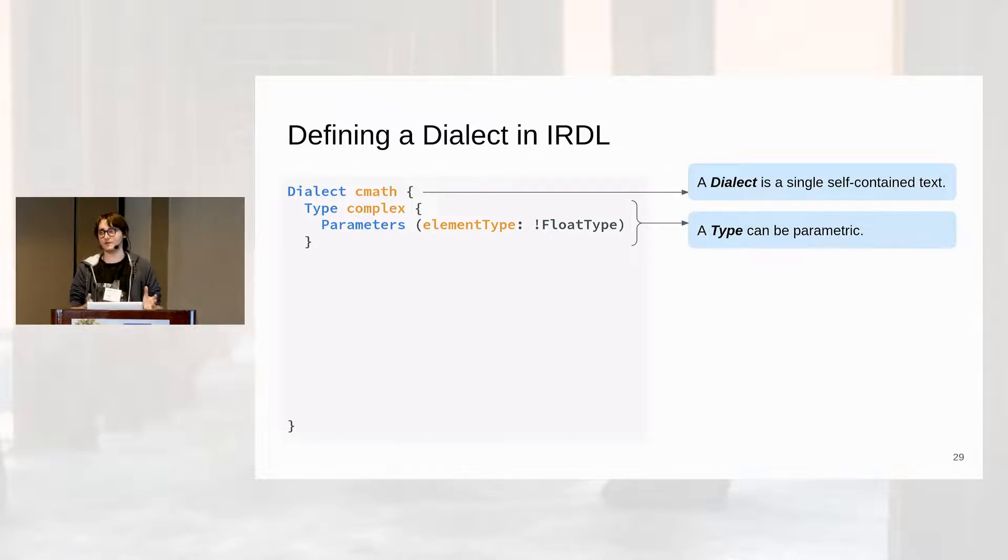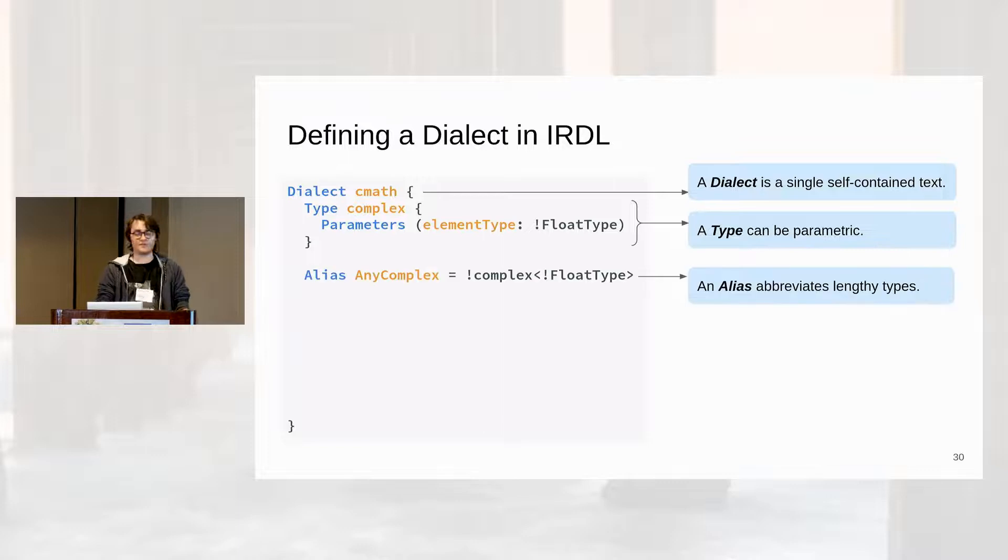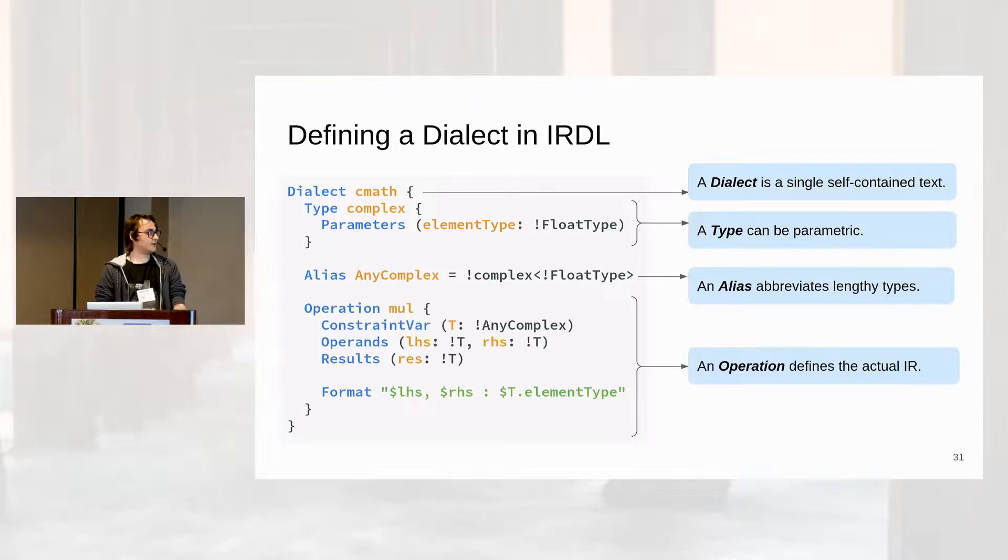Whenever you want to create a complex type, you need to write this parameter and this parameter needs to satisfy the predicate that is defined by this constraint. Here this constraint, the float type, is built in and essentially it's any floating point type. We can define aliases to make the code a bit more concise. For instance, we define the alias for any complex, which represents a complex type that can have any parameter in it.